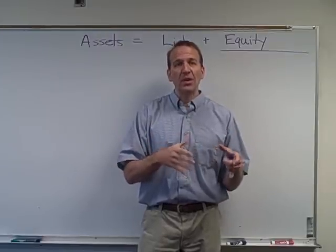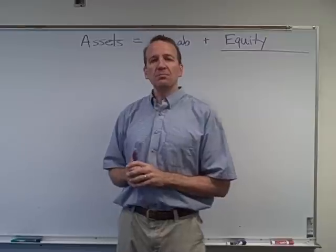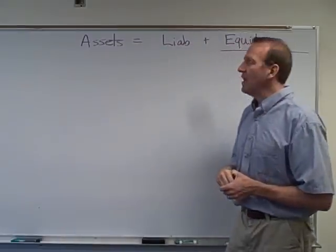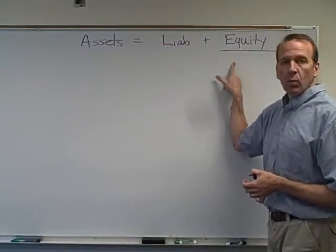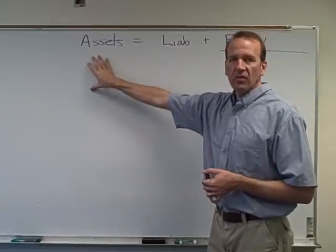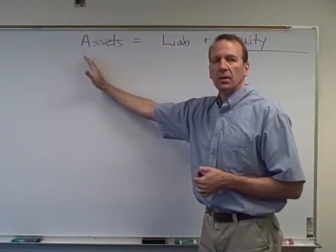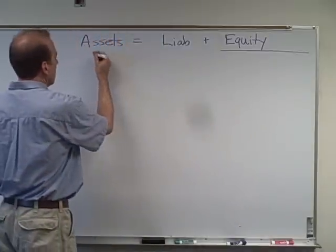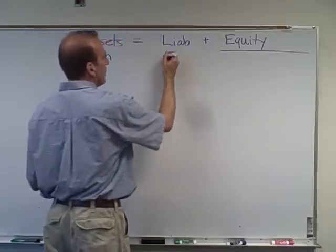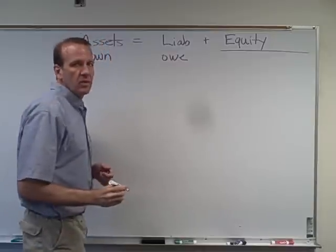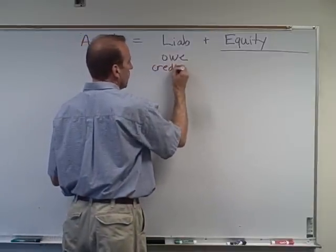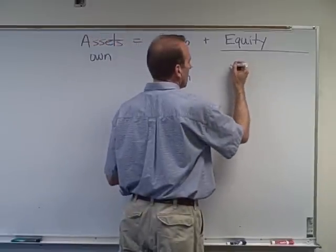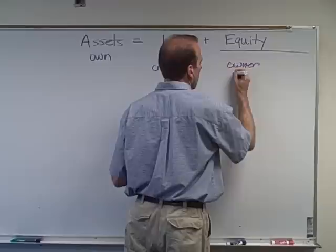As you go into different accounting classes, they assume you remember what you learned in this one. The first main concept is the accounting equation: Assets equal Liabilities plus Equity. Assets are things that we own. Liabilities is what we owe to somebody else — we can call these the creditors' claims. Equity is the owner's claim on the business.